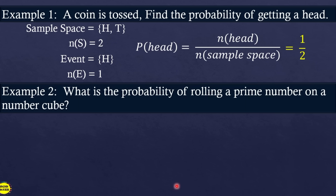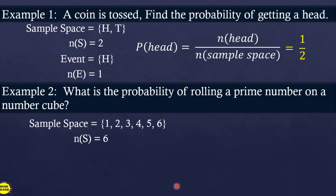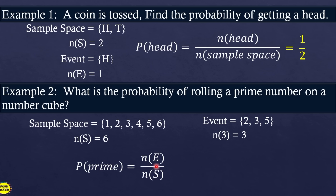Example 2: What is the probability of rolling a prime number on a number cube? The sample space is {1, 2, 3, 4, 5, 6}, so the number of sample space is 6. The event we are looking for is the prime numbers, which are 2, 3, and 5 — so there are 3 events. Computing the probability: 3 over 6, which simplifies to 1/2. Always reduce your answer to lowest terms.